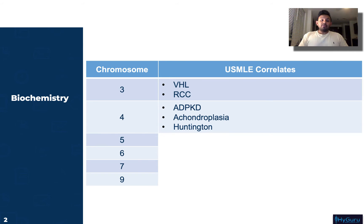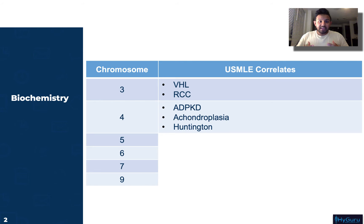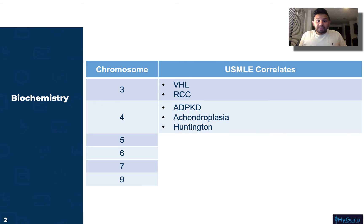Chromosome number four is going to be related to autosomal dominant polycystic kidney disease. This presents in an adult or teenager — the patient is not only going to have multiple cysts on the kidney, but they're going to have hypertension. They may even have berry aneurysms and can present with cerebral hemorrhage. Achondroplasia is also related to chromosome number four. Think of having four short arms — achondroplasia is the most common cause of dwarfism, and these patients have a normal lifespan and normal intellectual capability.